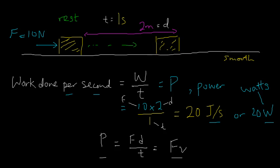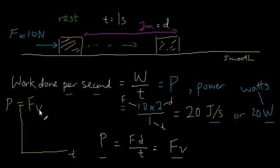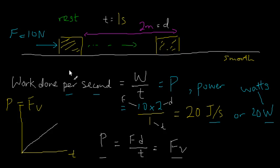If I plot a graph of power against time, because power equals force times velocity, and since I'm applying a constant force while the velocity increases uniformly, the power must also increase uniformly — so it goes up in a straight line. That's how the power behaves with time when I am pushing a box along a smooth surface.